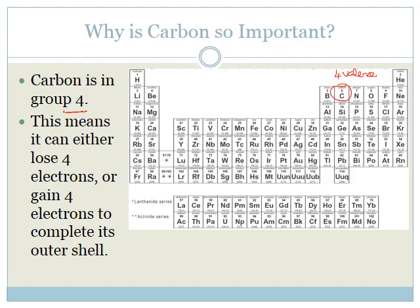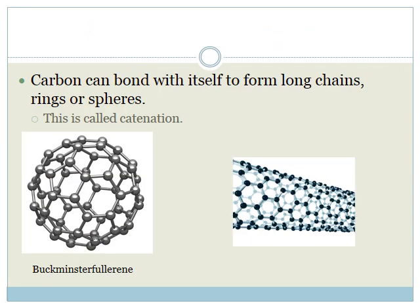Now let's just confirm what we learnt in the last video. Why is carbon important? As they pointed out in the video, carbon is in group four. So it's in period two, group four. And what that means is that it has four valence electrons, which means it can go either way. It can either lose four electrons or it can gain four electrons to complete its outer shell. So that means it can bond with most of the things on the periodic table.